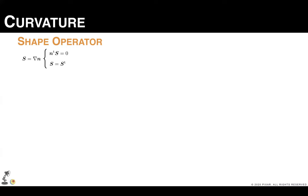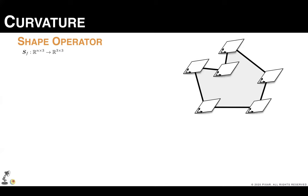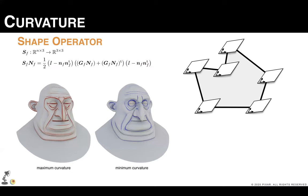And we assemble this matrix using this expression, where capital N indicates a matrix with all the normals of the vertices incident to the face f. Notice how, in our construction, we are symmetrizing the gradient of the normals, thus making the shape operator also symmetric. And in these outside terms, we are making sure that the shape operator is orthogonal to the face normal. We can then extract principal curvatures and directions from the shape operator by computing its eigenvalues and eigenvectors.